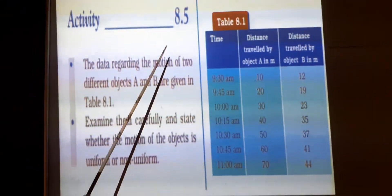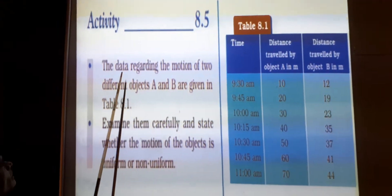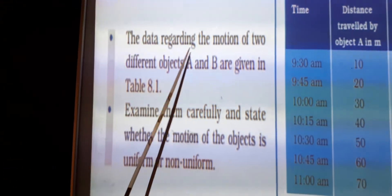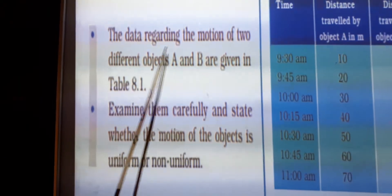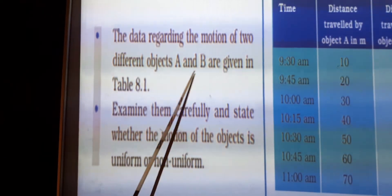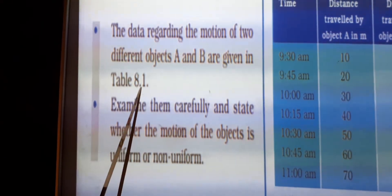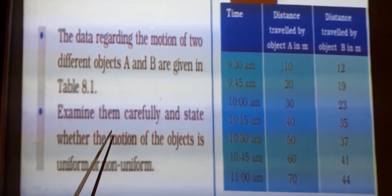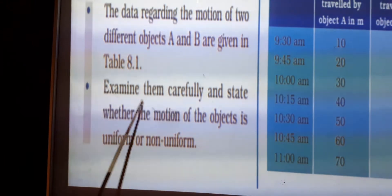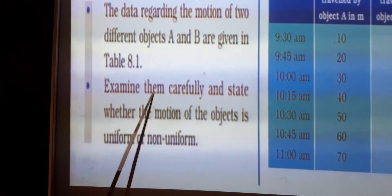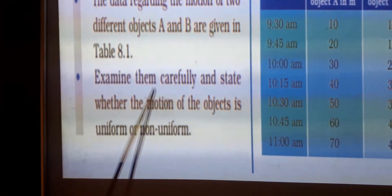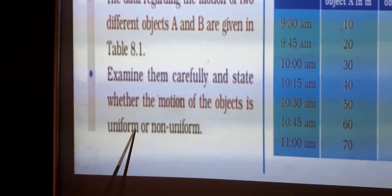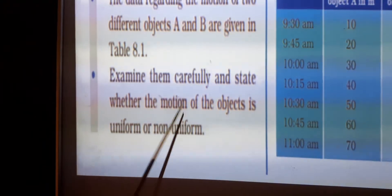This is activity 8.5. In this activity, you observe that the data regarding the motion of two different objects A and B are given in Table 8.1. Now it is asked to examine them carefully and state whether the motion of the objects is uniform or non-uniform.